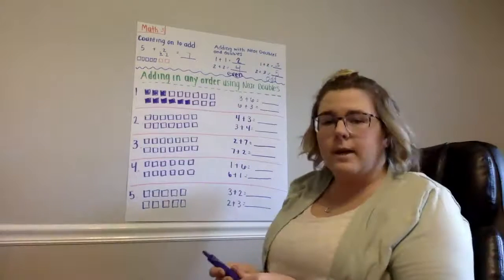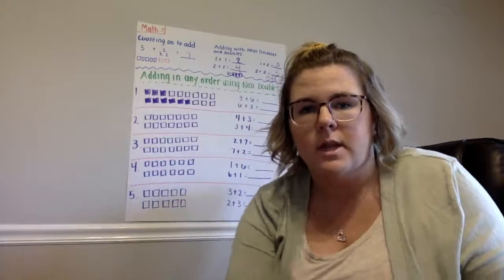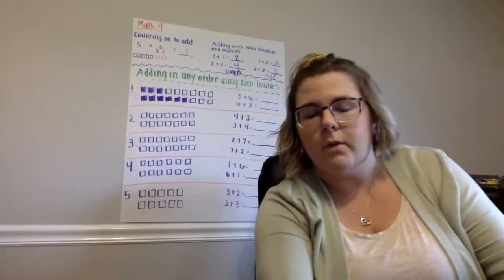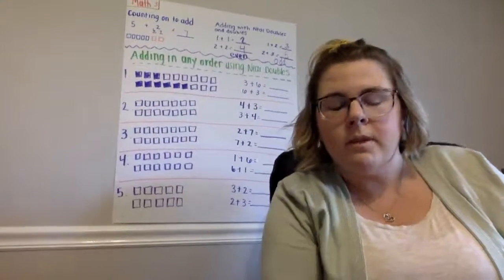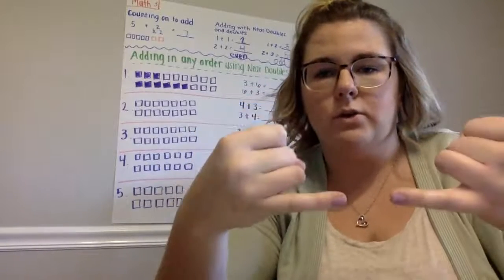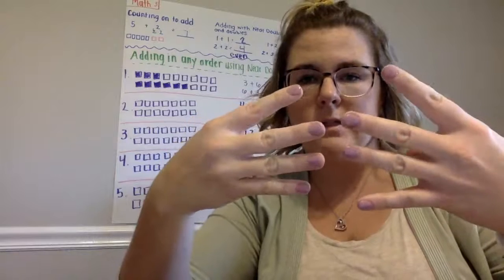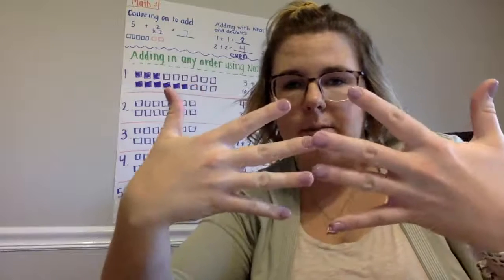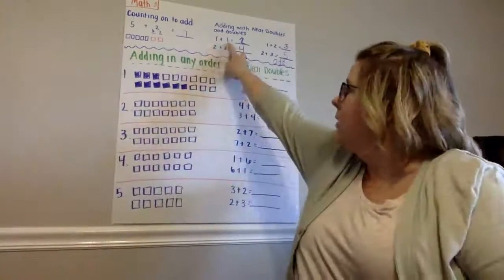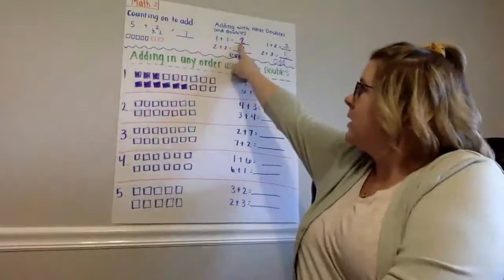Now, the other skill that we talked about last week was adding with near doubles and just doubles. So we remember, had our fingers, we had 2, 4, 6, 8, and 10. When we add with doubles, as you can see, we have 1 plus 1. So 1 plus 1 equals 2.